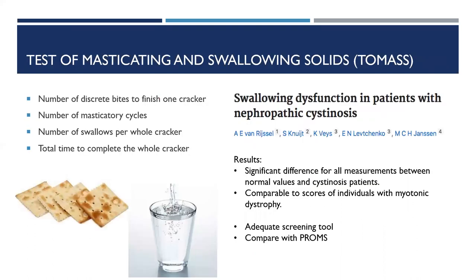I wanted to mention the Test of Masticating and Swallowing Solids, or TOMASS, which was brought up in a talk yesterday. Swallowing hasn't been readily discussed in the cystinosis population — Sonies and her group did some early research in 2005 out of the NIH and started to describe swallowing changes common to patients with cystinosis. More recently, a study using the TOMASS identified the presence of dysphagia to solid foods in patients with cystinosis, finding significant differences in oral phase swallowing similar to patients with myotonic dystrophy. These are really the two main things that have been looked at more recently.